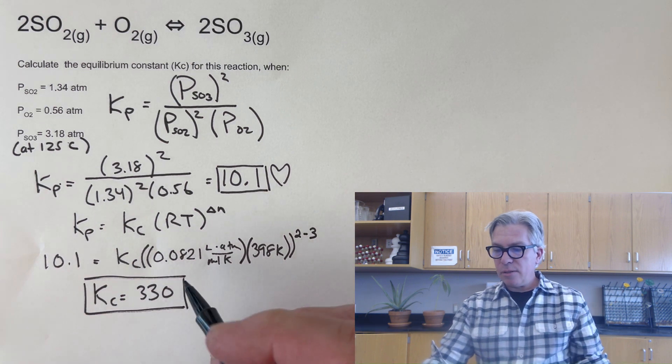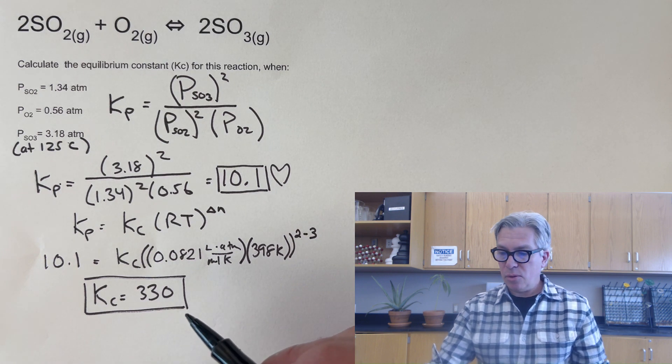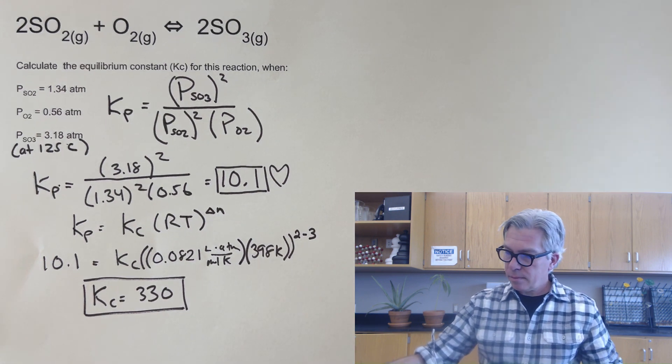And when I do that, I get a Kc value of 330. So a big difference between the Kp value and the Kc value, but that's just because the number of moles changed.